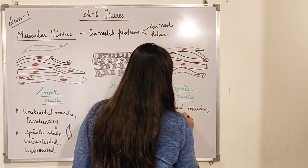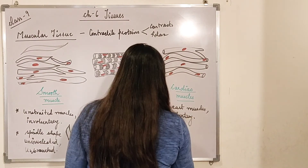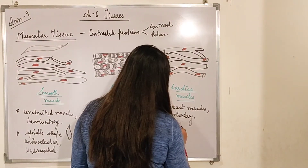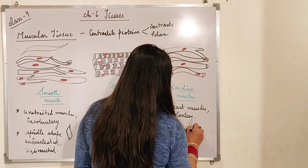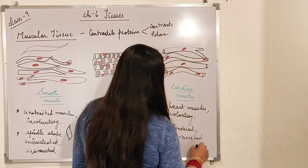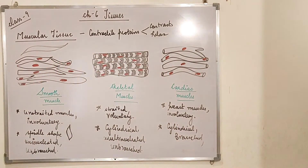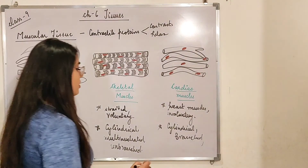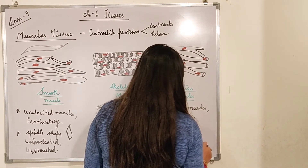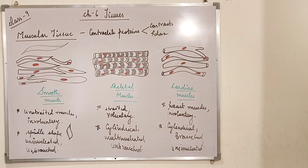Cardiac muscles are involuntary. Now looking at the shape — you can see the shape is cylindrical. They are cylindrical in structure and they are also branched. As for the nucleus, you can see here it is uninucleated. So that is all about our muscular tissue, its types and explanation.